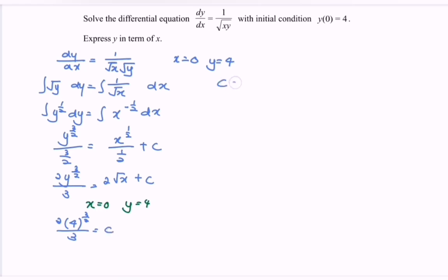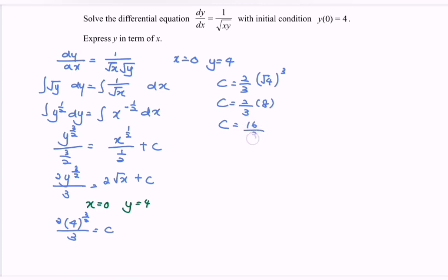So c equals 2/3 times the square root of 4 to the power of 3, which is 2/3 times 2 multiplied by 8, giving us 2 times 8 over 3. Therefore c equals 16 over 3.